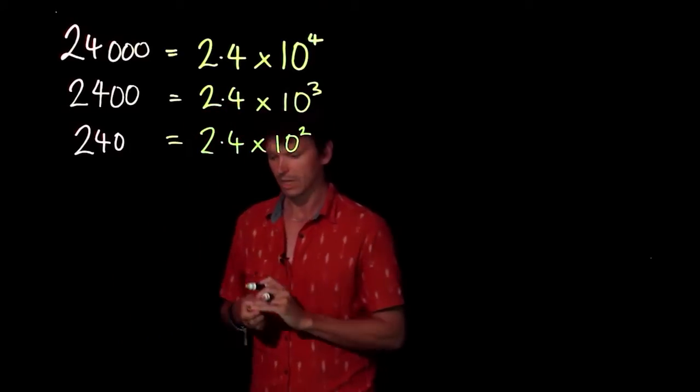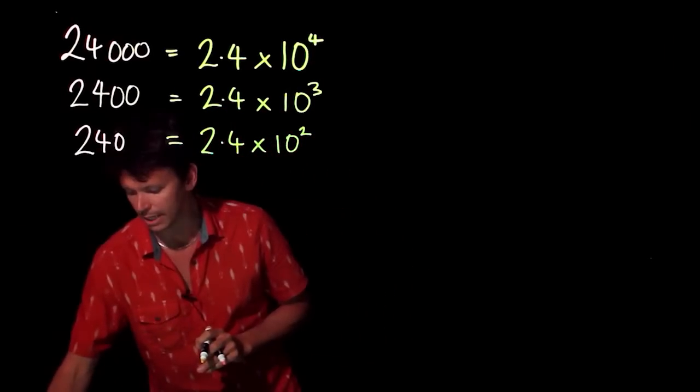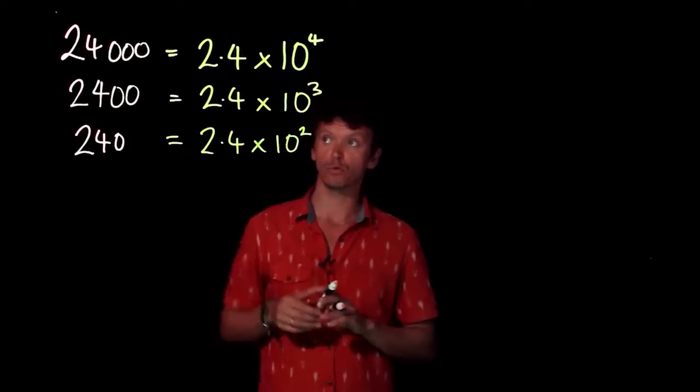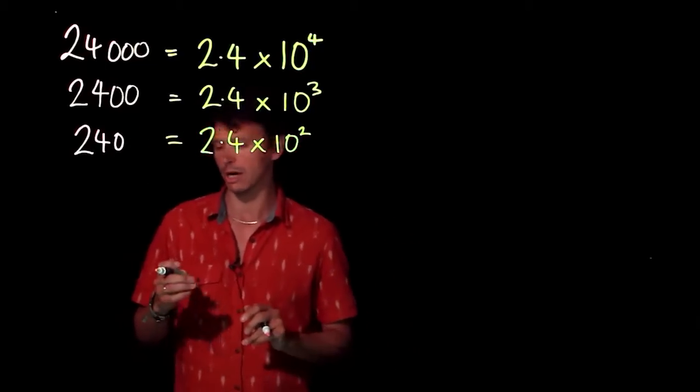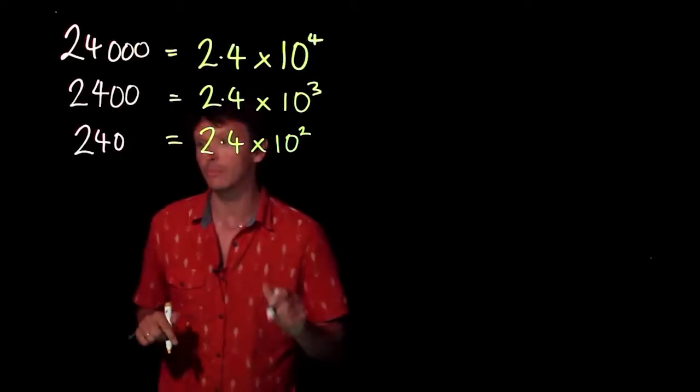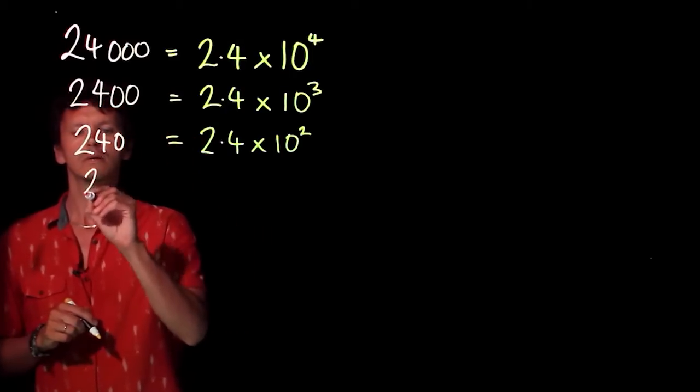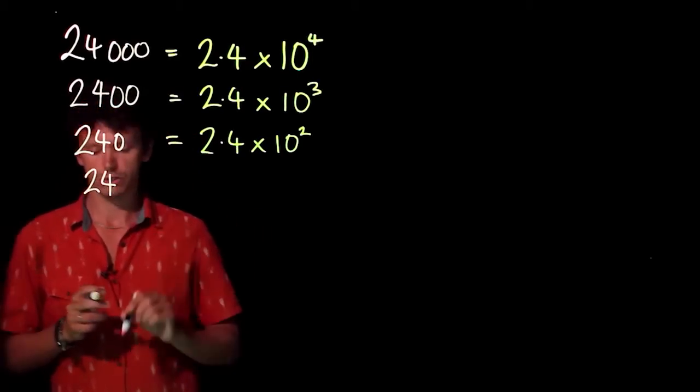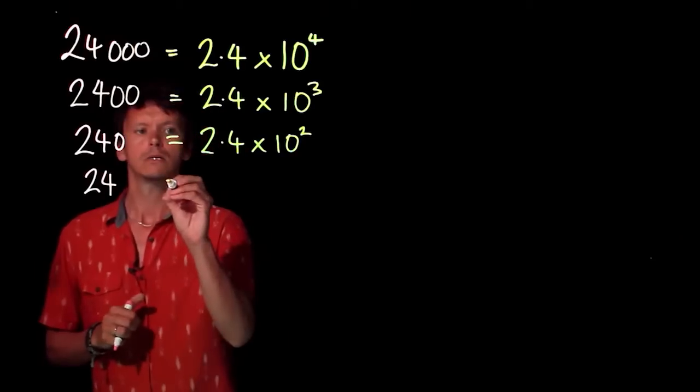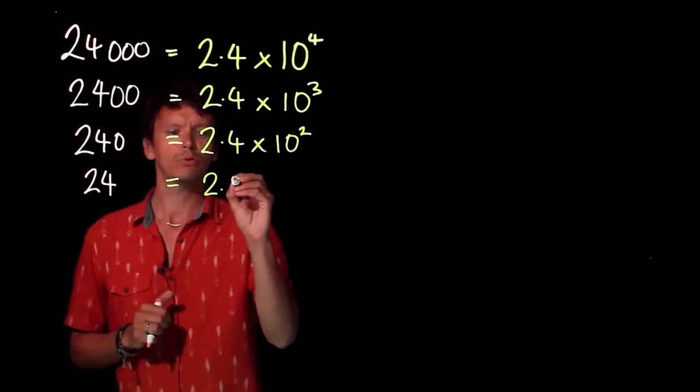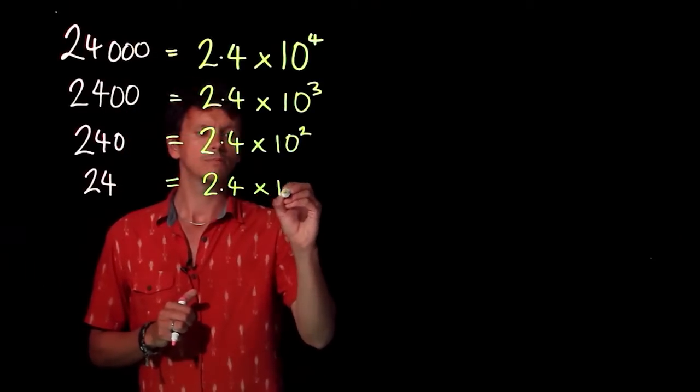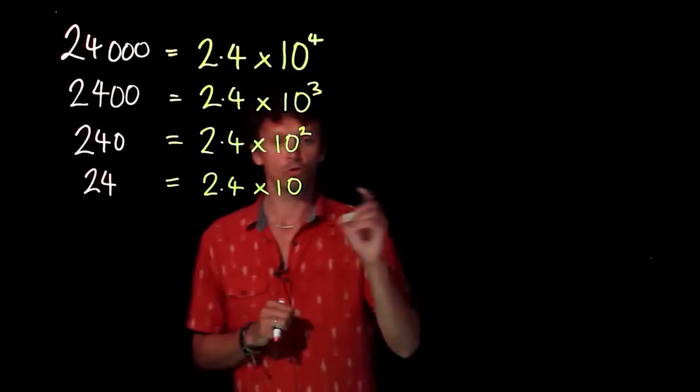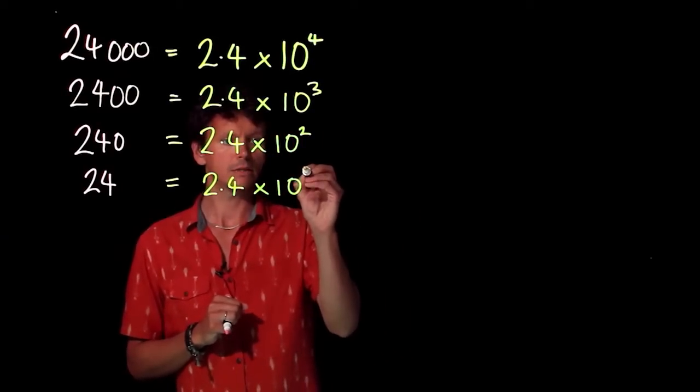That's 2.4 times 100. Now supposing we continue this list and make this number get smaller and smaller by a power of 10 each time. Coming down one more power of 10 gives us 24, that equals 2.4 times 10 to the power of 1.